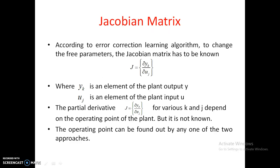In this aspect, we need to see the Jacobian matrix. According to the error correction learning algorithm, to change the free parameters we need the Jacobian matrix. To get this Jacobian matrix, we need to depend on the operating point of the plant — but that is unknown to us. There are two approaches we can follow to find the operating point of the plant.